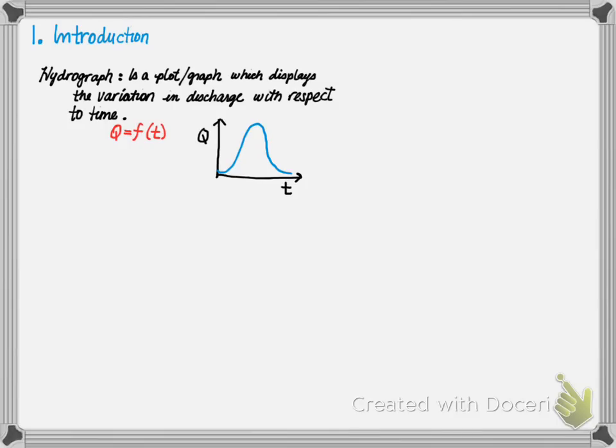An introduction. By definition, a hydrograph shows runoff as a function of time. It is a plot or graph which displays the variation of discharge with respect to time, as shown in this schematic.